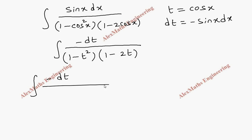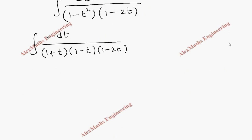The first term (1 minus t squared) can be split into (1 plus t)(1 minus t) using the formula a squared minus b squared equals (a plus b)(a minus b). The other term remains (1 minus 2t) as it is. Now we are going to apply partial fractions to these terms.